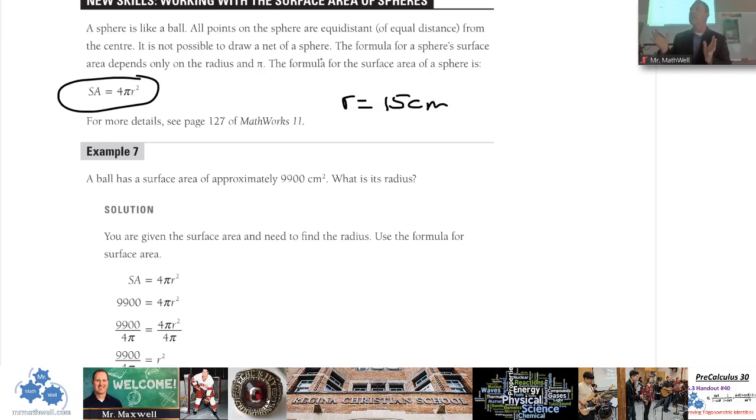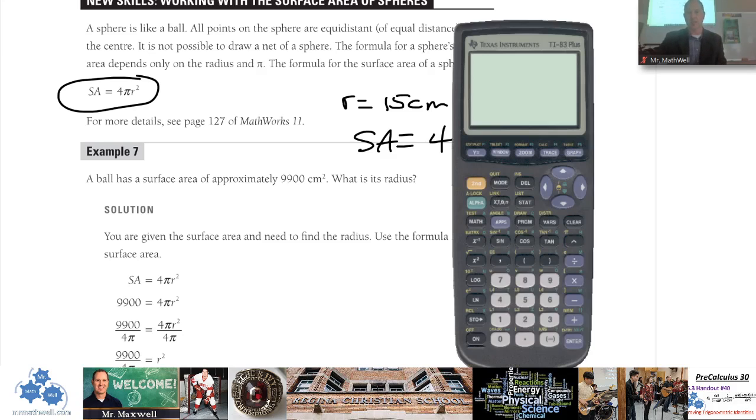Surface area equals 4 times π times 15 squared, 15 squared. Let's get on our calculator here.